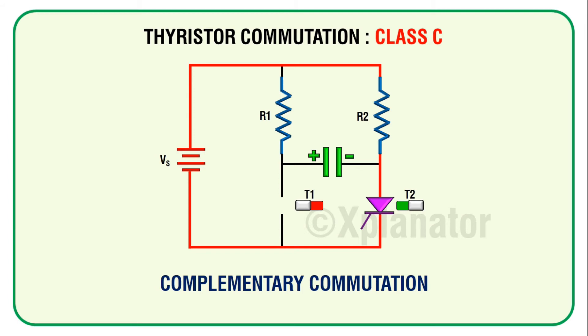The circuit is working with load current flowing through T2 and the capacitor charged to Vs. To turn off T2, we will have to fire thyristor T1. Load current will flow through T1, and since T1 acts as a closed switch, the charges will travel from the capacitor to thyristor T2. The anode gets negative charge and the cathode gets positive charge. This voltage of magnitude minus Vs will reverse bias thyristor T2.